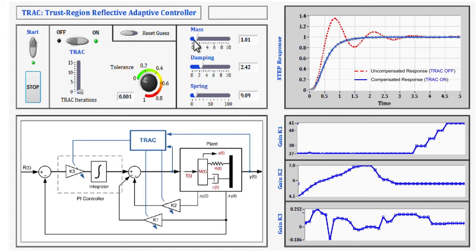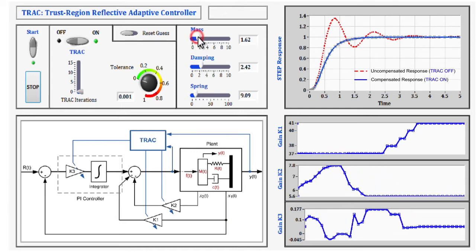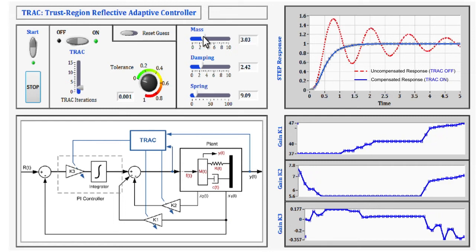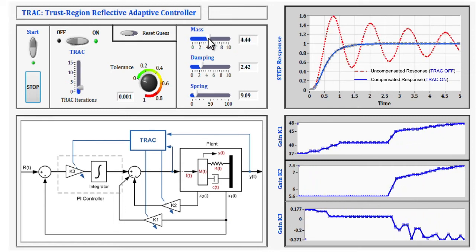With this comparison, one can easily see how the actual output stays in line with the desired output when TRAC is on, even in the presence of large parametric uncertainties.